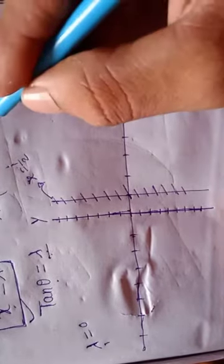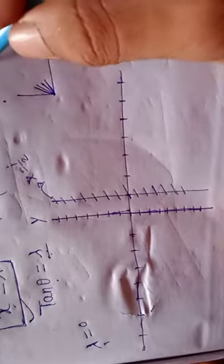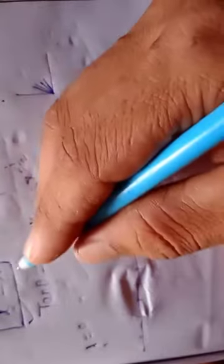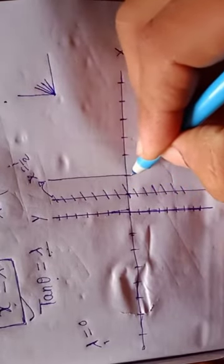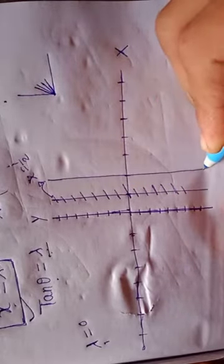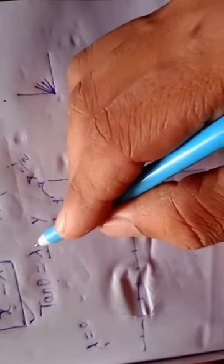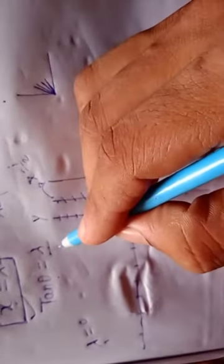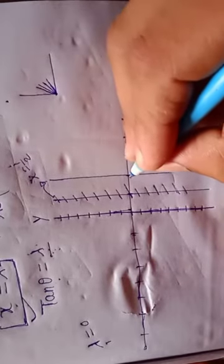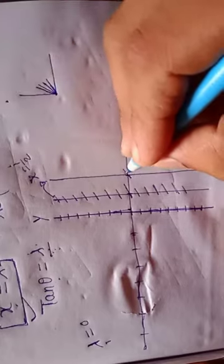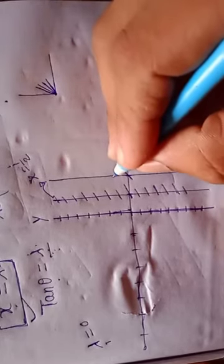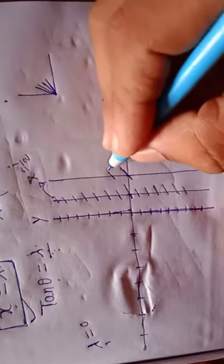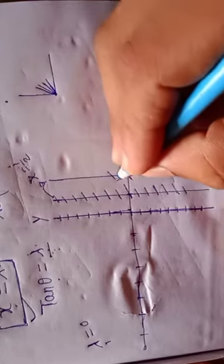Now we draw the line x = 1. For this isocline, lambda = 1, so tan θ = 1, which means θ = 45°. The line segments drawn along x = 1 will all be oriented at 45° and will all be parallel to each other.